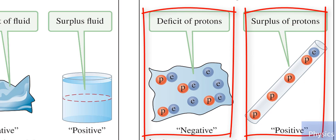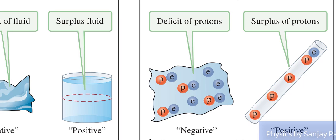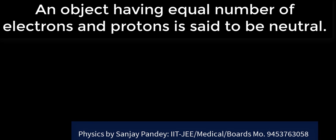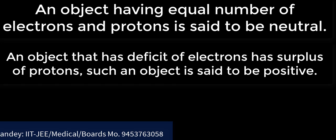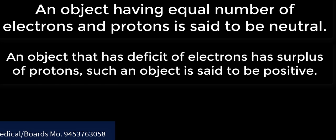Our sign convention is based on the relative number of electrons and protons in a given object. An object that has an equal number of electrons and protons is said to be neutral. An object that has a deficit of electrons has a surplus of protons. Such an object is said to be positive.